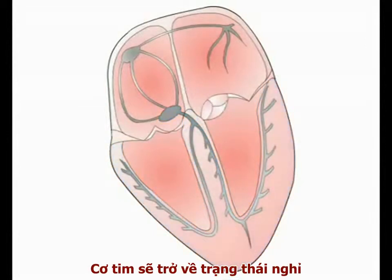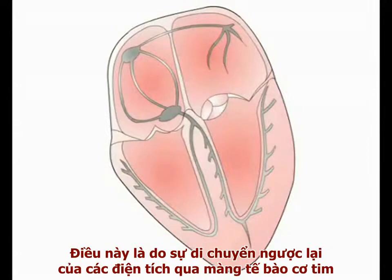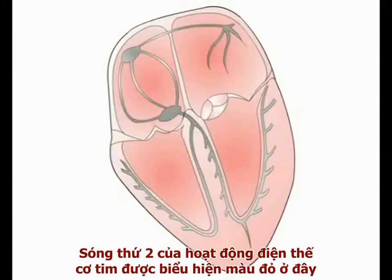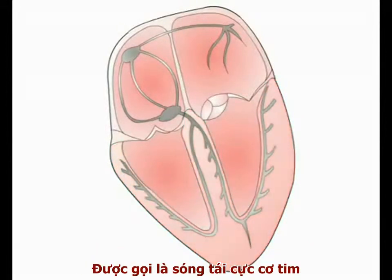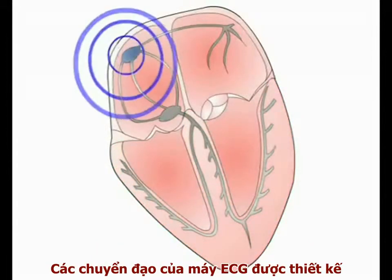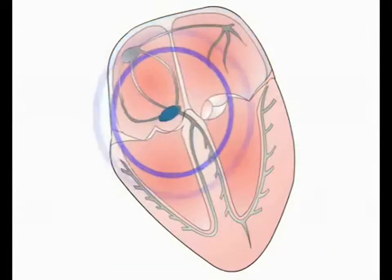Following systole, cardiac muscle returns to a resting state, and this is associated with reversal of the movement of charge across the myocyte membranes. This second wave of electrical activity, seen here in red, is termed cardiac repolarization. The leads of the ECG machine are designed to detect and record these two waves of cardiac electrical activity.